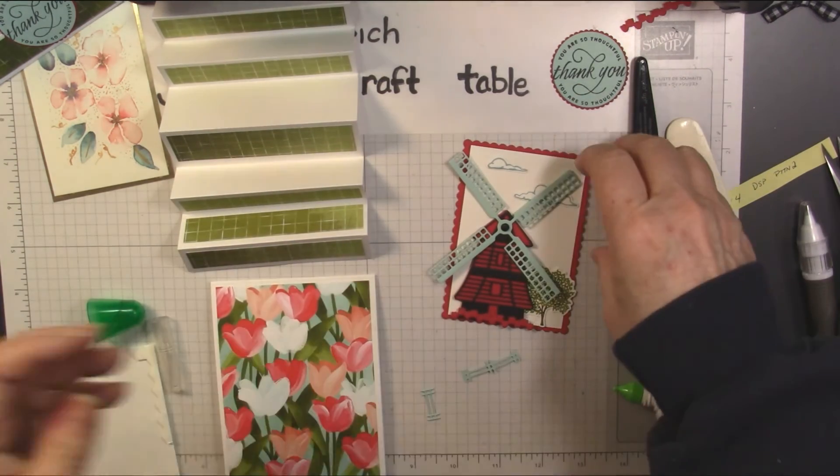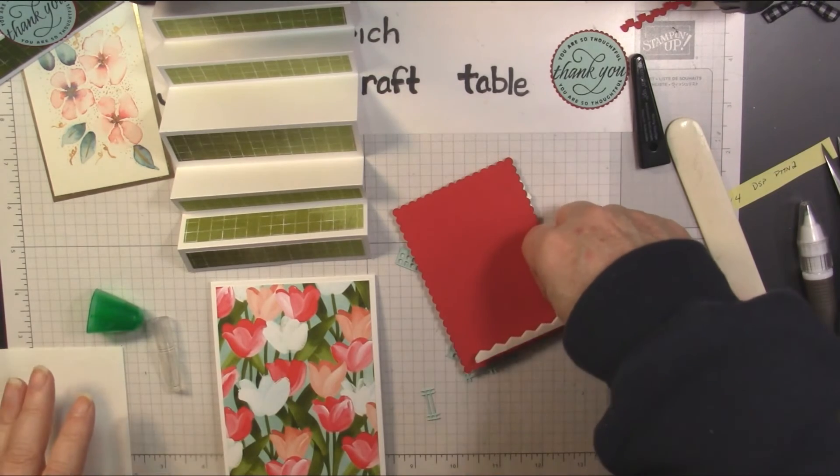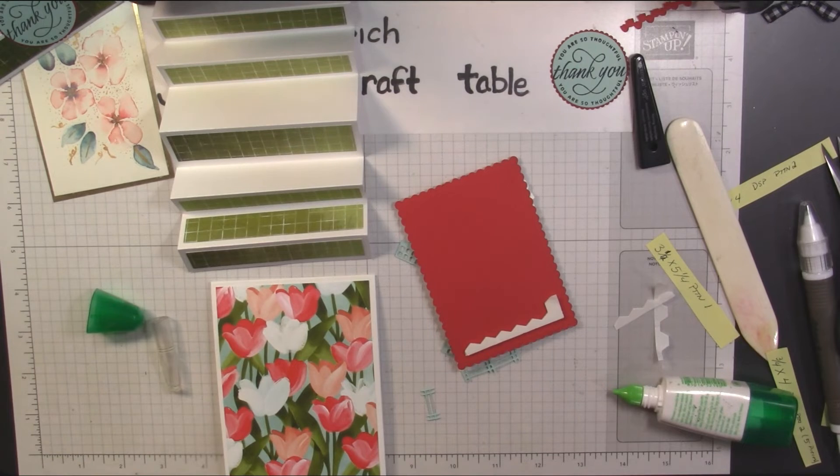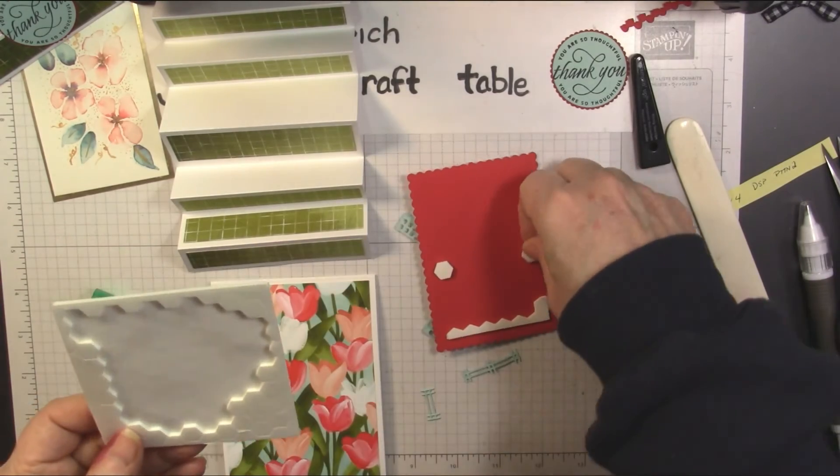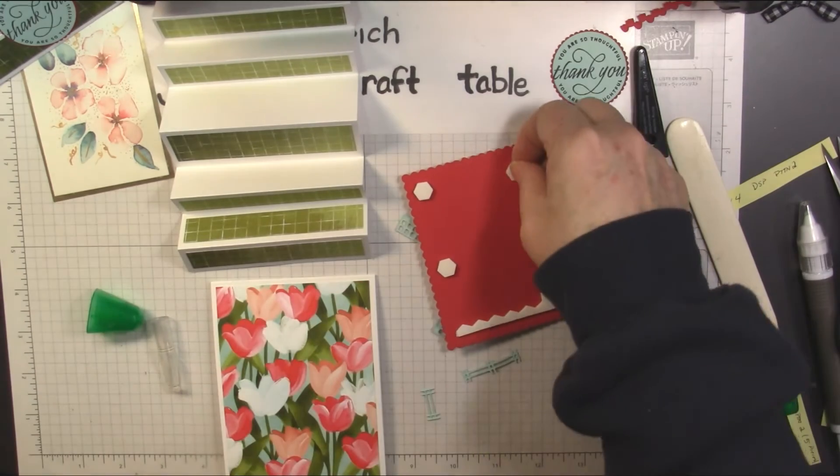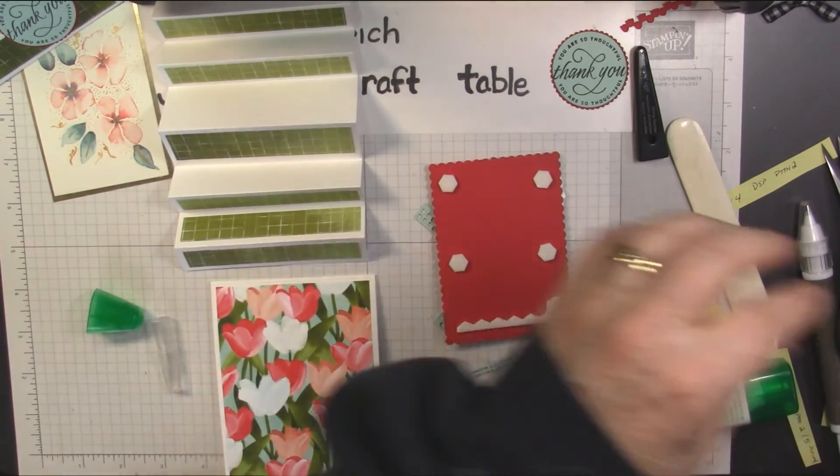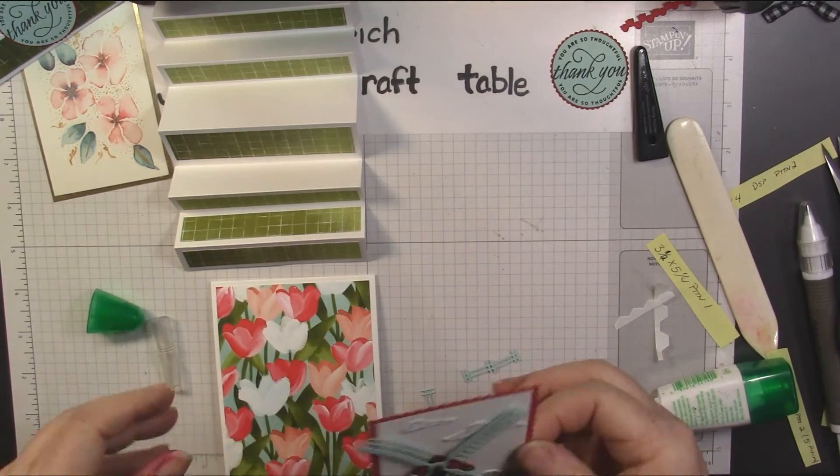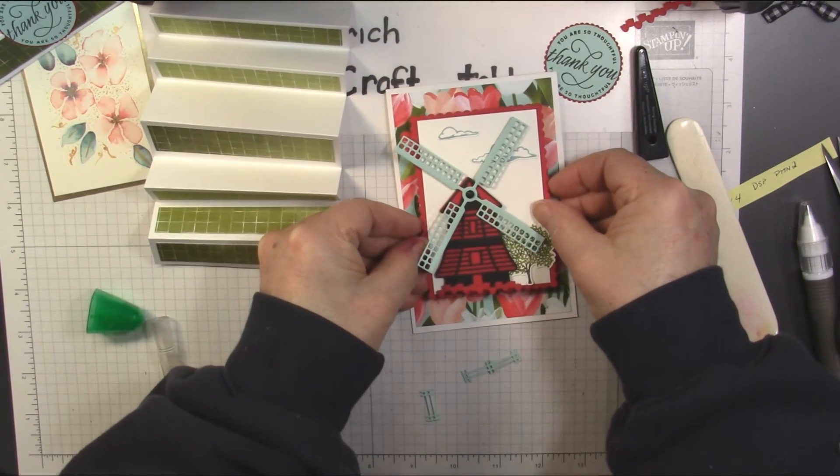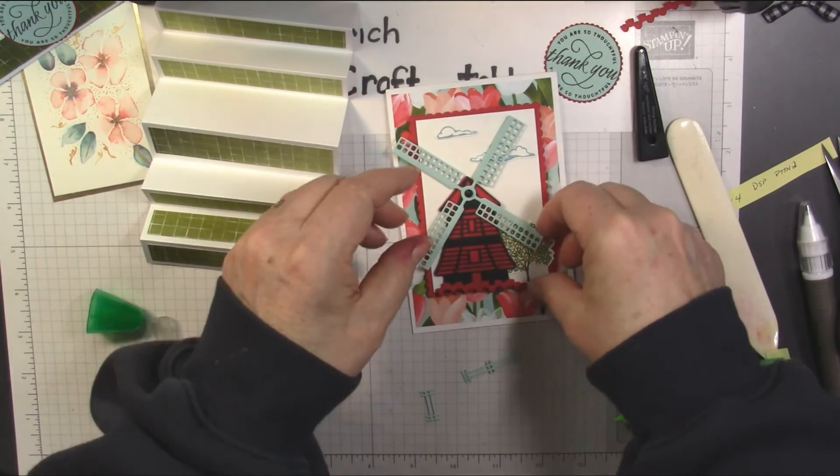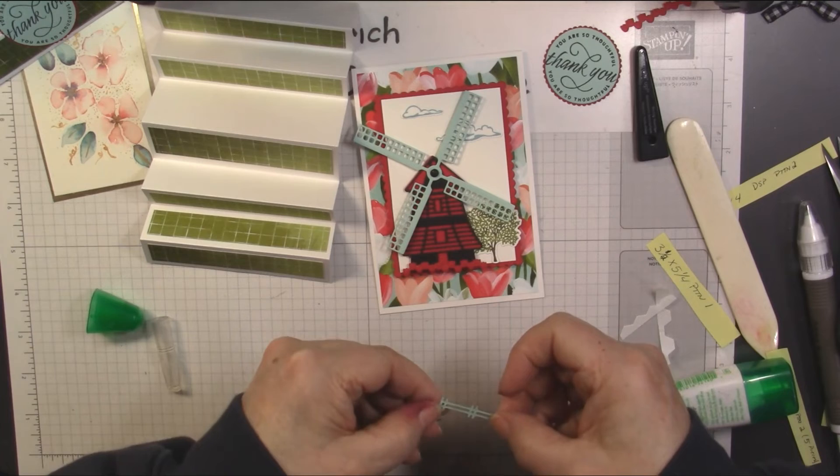Now this is going to get popped onto here, so we need some more dimensional. Finish up this piece and add some more. This is going to get centered on the front of this card. That could be a card all on its own, it's pretty just like that.